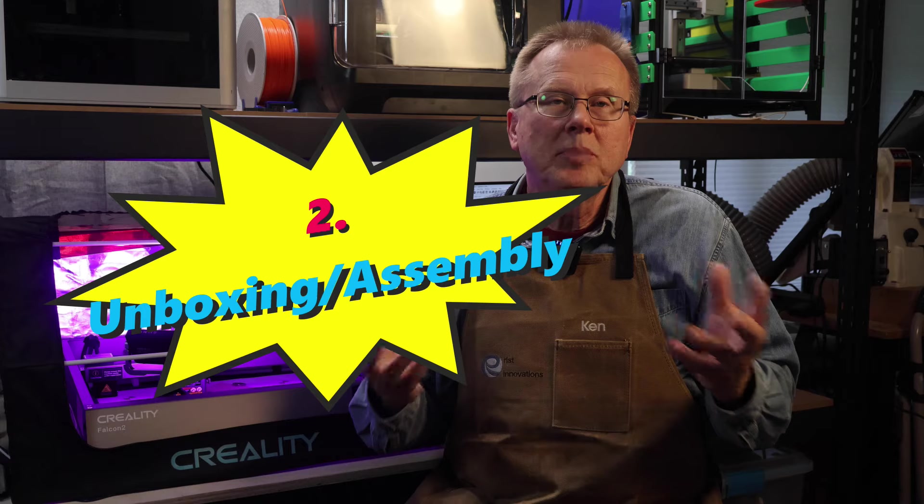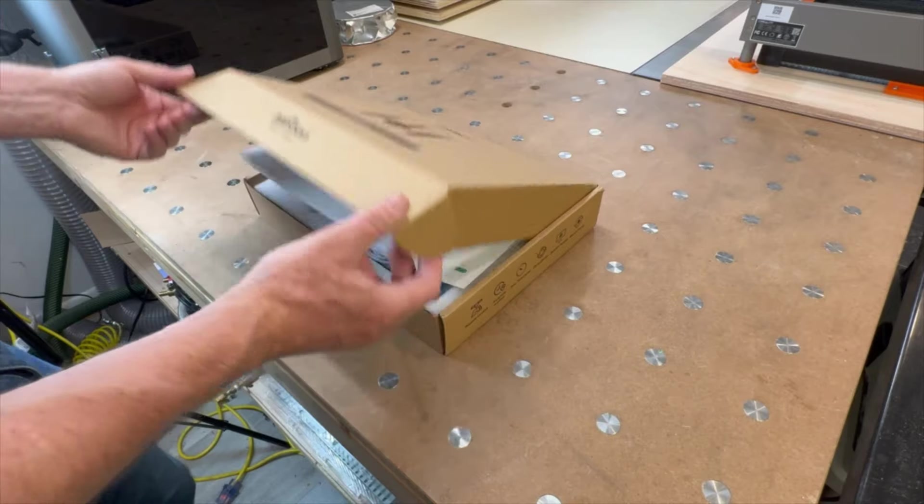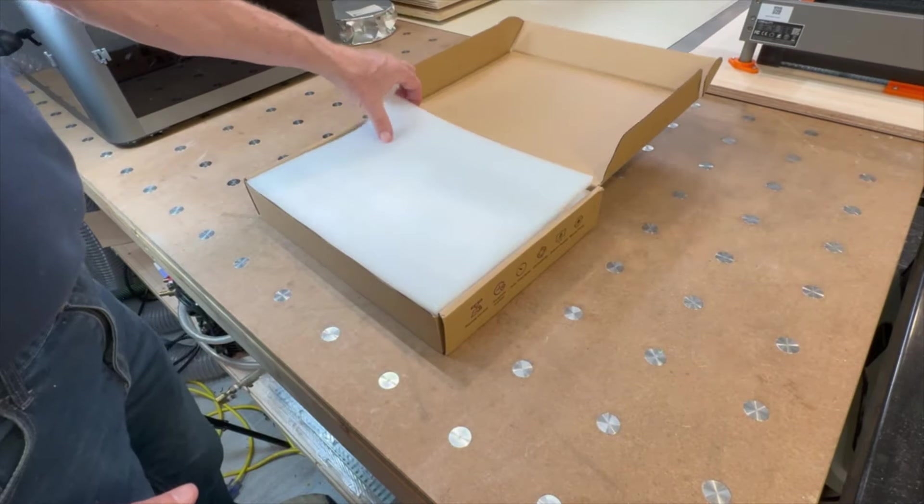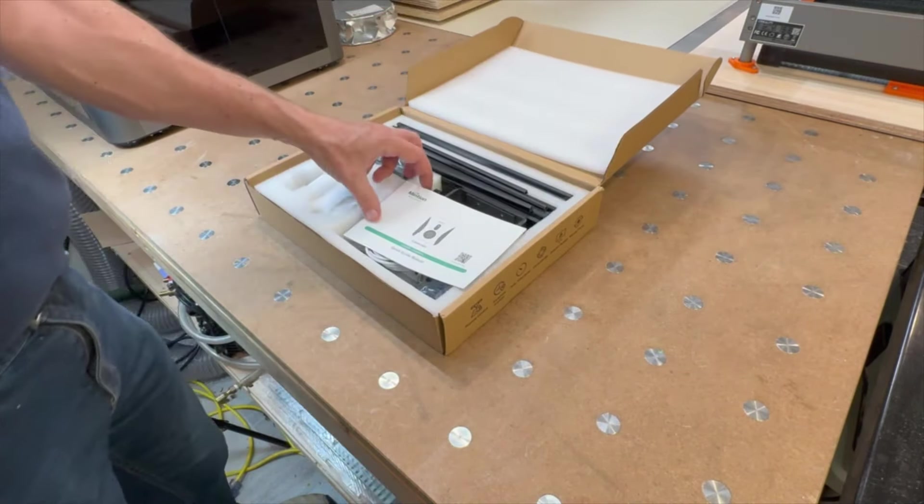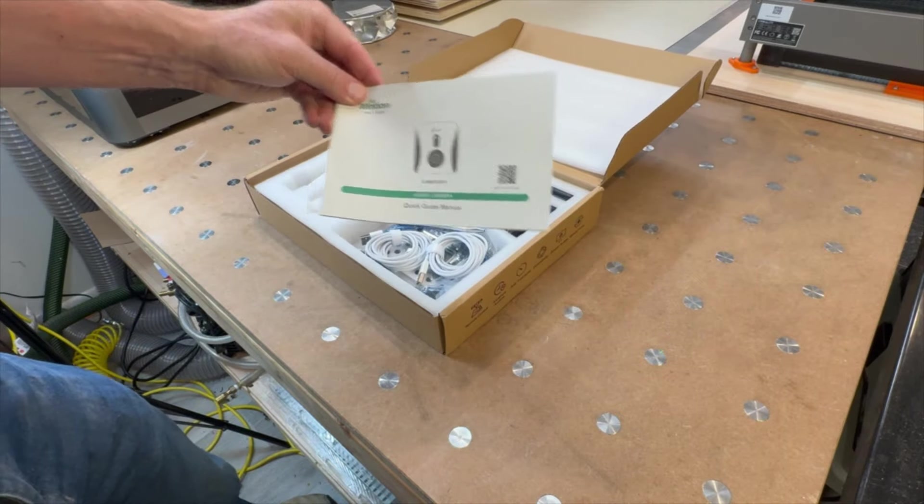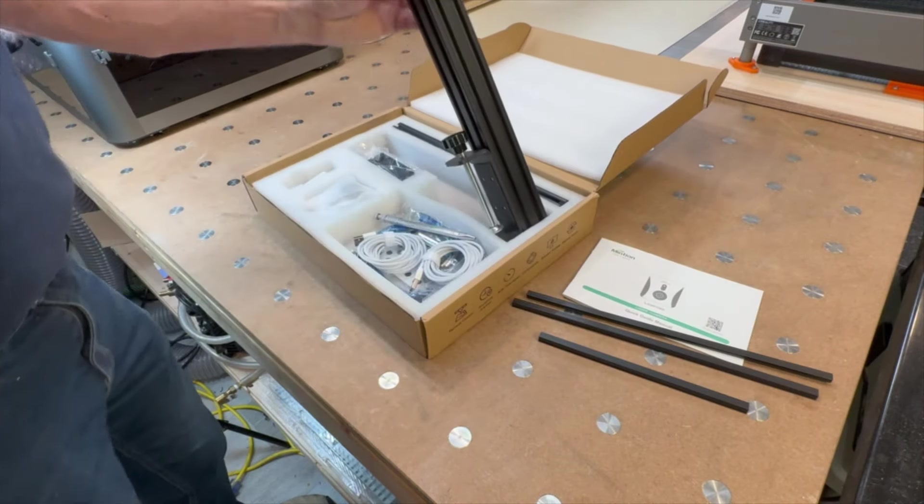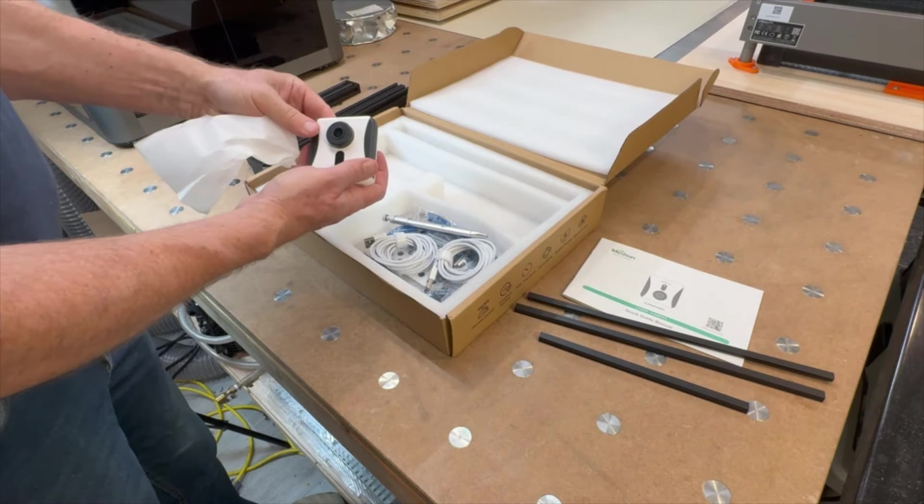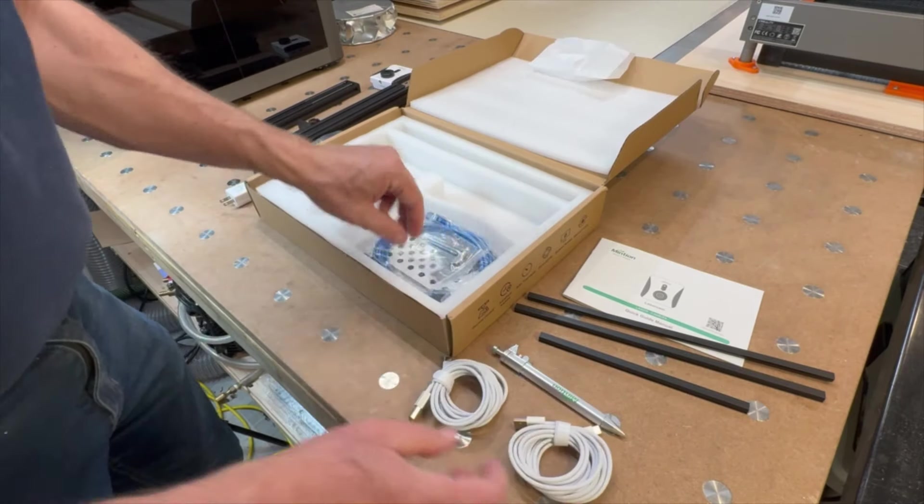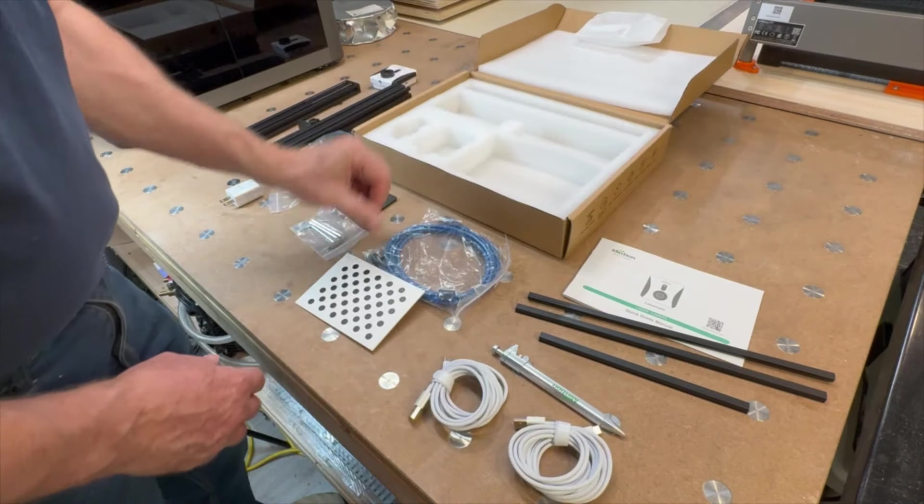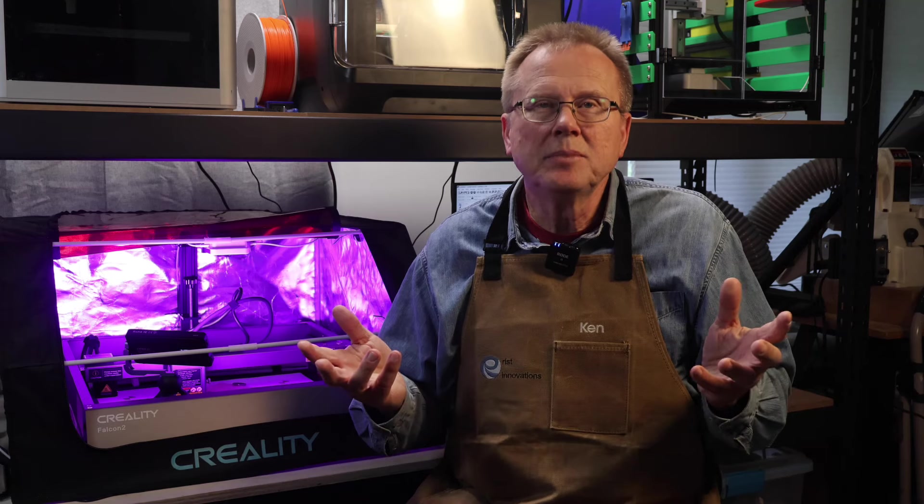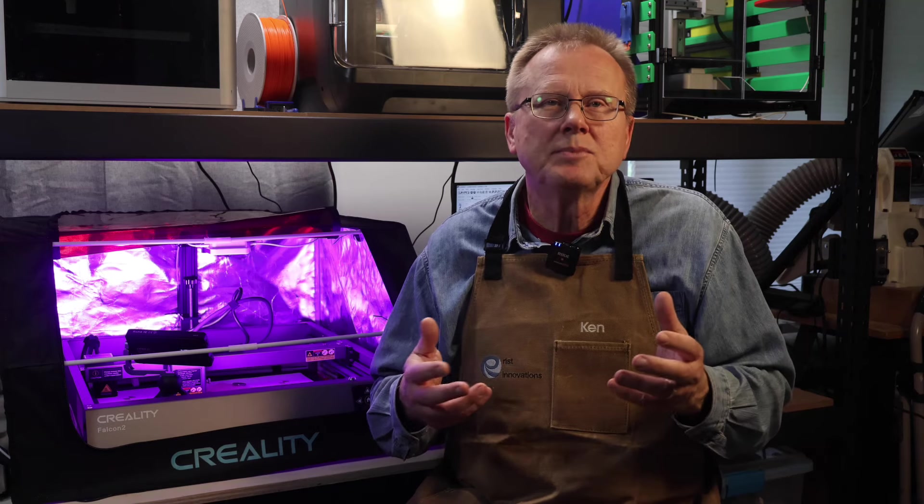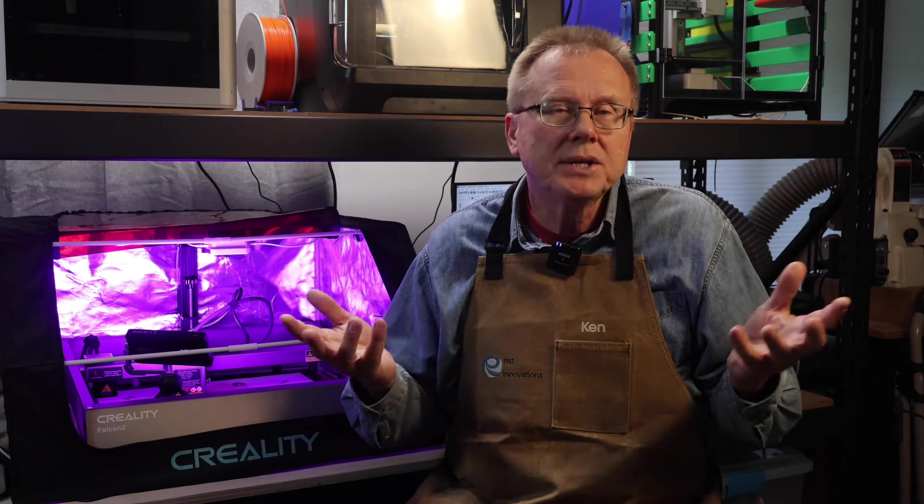So now let's get into the unboxing and assembly. The camera kit is nicely boxed with all of the parts well protected in foam. The kit includes an instruction manual, vertical and horizontal extruded aluminum rails, camera adapter, a 1080 pixel camera, various cables, and a calibration card. The kit is easy to assemble and it only takes a few minutes before you're ready to mount it on your laser engraver.